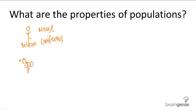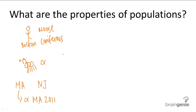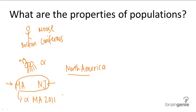Let's say you have a species of ant called the alpha ant and it lives in two places: Massachusetts and New Jersey. If you wanted to talk about the population of alpha ants in Massachusetts, you are only referring to the alpha ants in Massachusetts at this time. If you were talking about the population of alpha ants in North America, you are referring to both Massachusetts and New Jersey, because North America encompasses both.